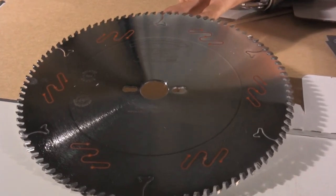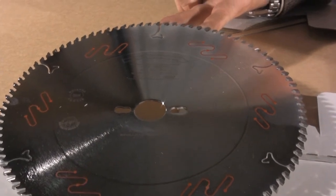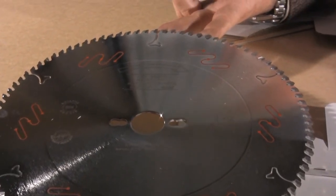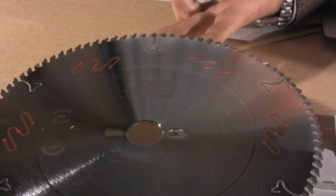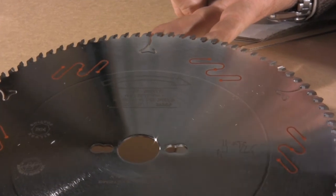The blade is not included in the price of the saw and has to be ordered separately. If however you order the blade together with the saw, you will receive the saw with the blade already installed and ready for use.